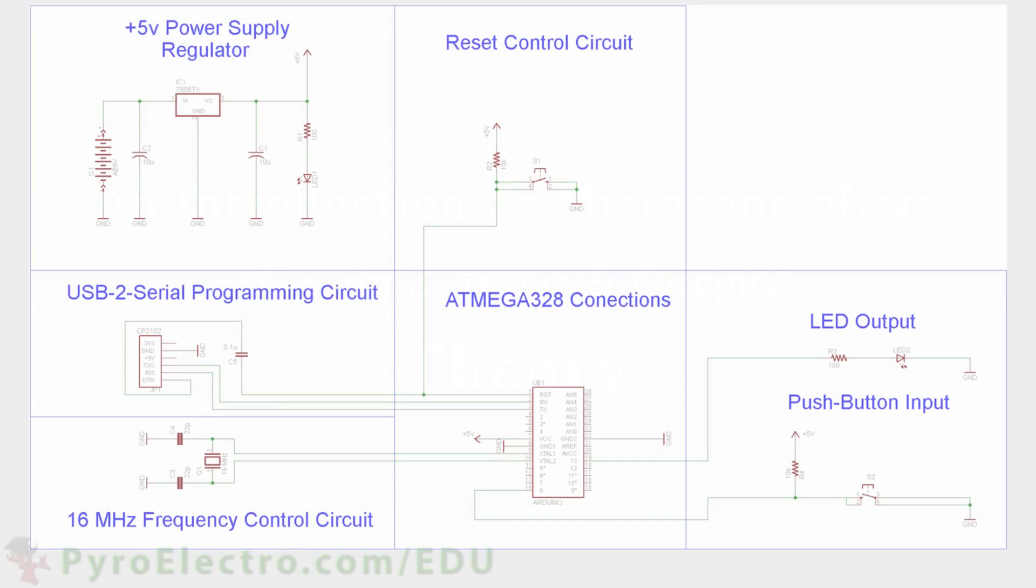For this lesson, we want to create a one input, one output system. This means that given one input, the output should react a certain way. The one input will come from a push button, and the one output will be from an LED. The hardware side of this experiment will follow this familiar schematic, but let's build it up part by part like we did in lesson 2.